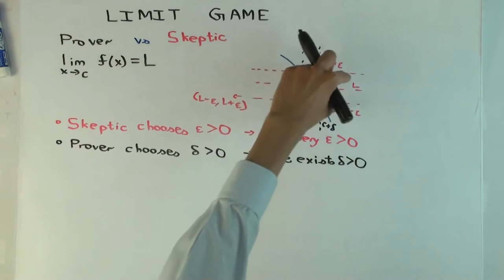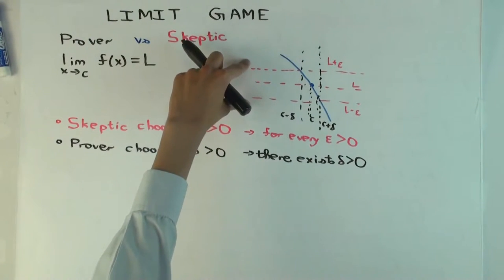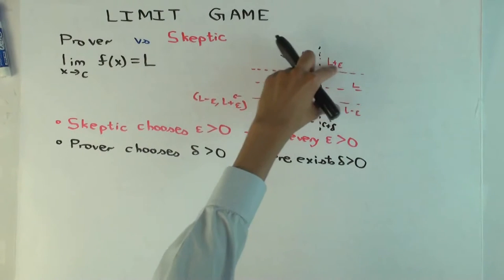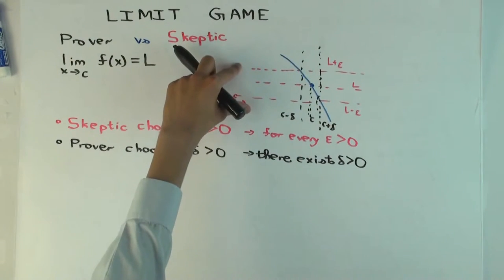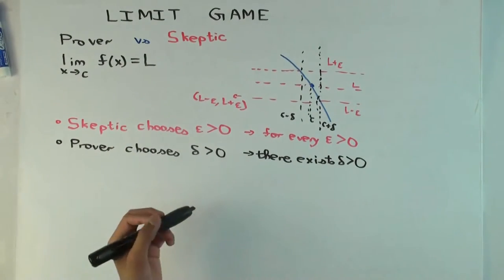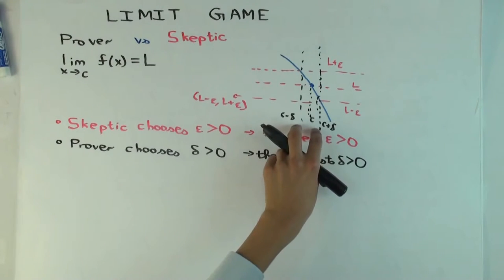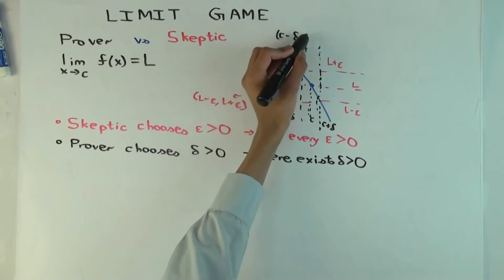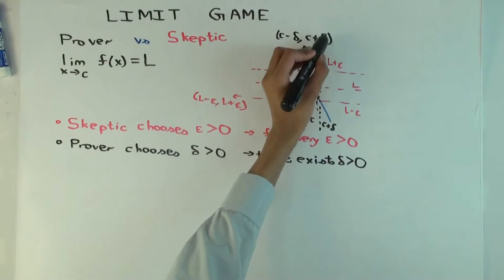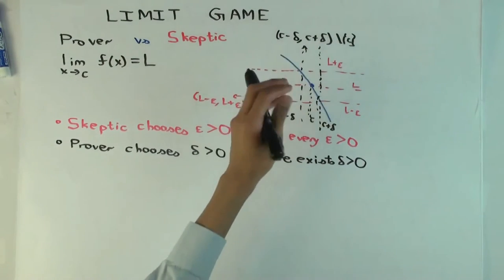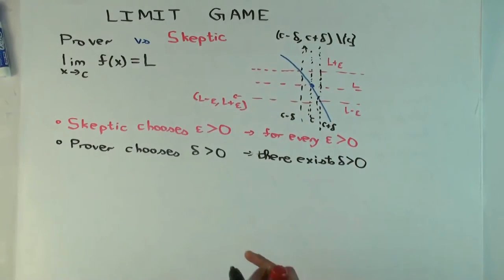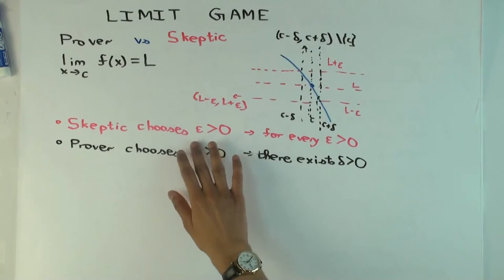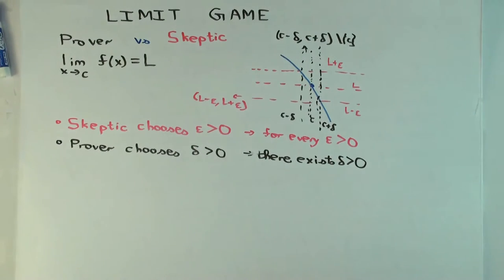The skeptic chooses the strip from l minus epsilon to l plus epsilon by choosing epsilon — the skeptic just picks a number epsilon but is effectively choosing that horizontal strip. The prover then chooses a delta, effectively choosing the interval from c minus delta to c plus delta, except we don't really care about the point c itself — that's a small subtlety. So the skeptic chooses their interval by specifying epsilon, and the prover chooses their interval by specifying delta.